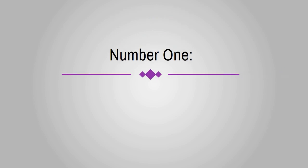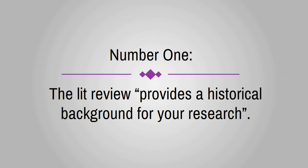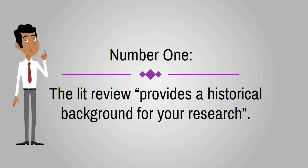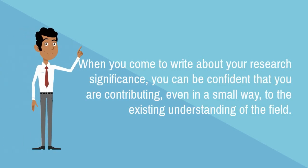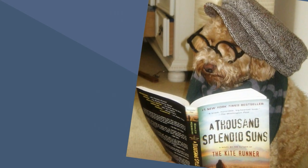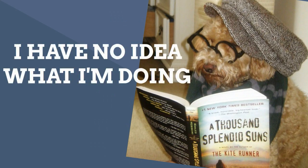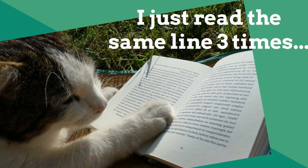Number 1. The lit review provides a historical background for your research. This is critical for two reasons. First, you need to know what has been written about your research so that you can present something new and significant to the field in which you are studying. When you come to write about your research significance, you can be confident that you are contributing, even in a small way, to the existing understanding of the field. The second reason is that it demonstrates to your reader or examiner that you know how to read theoretical concepts and translate them into your own words, and that you understand your field.